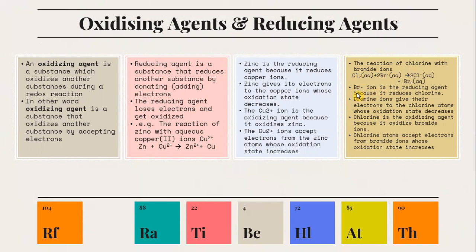The Cu2+ ion is the oxidizing agent because it oxidizes zinc — it accepts electrons from the zinc atom whose oxidation state increases. In the reaction of chlorine with bromide ions, Br− is the reducing agent because it reduces chlorine: bromide ions give their electrons to the chlorine atom whose oxidation state decreases. Chlorine is the oxidizing agent because it oxidizes bromide ions, accepting electrons from bromide ions whose oxidation state increases.